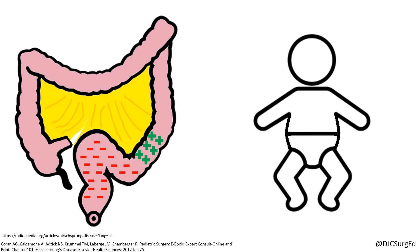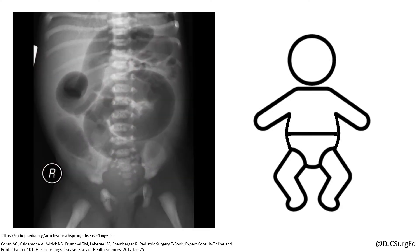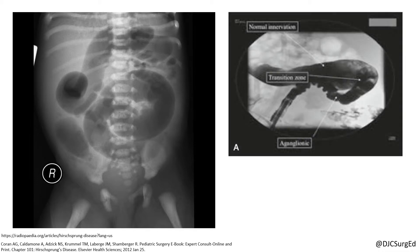For neonates with a clinical picture and radiographic evidence suggesting a distal obstruction, a water-soluble contrast enema is the study of choice. The pathognomonic finding on contrast enema is a transition zone between the normal and aganglionic bowel.